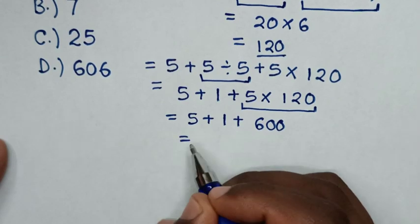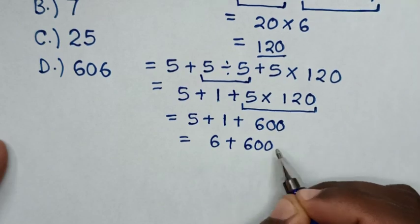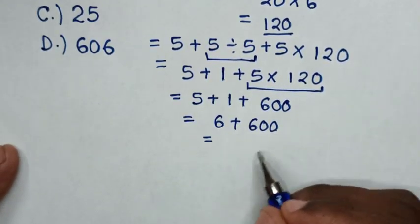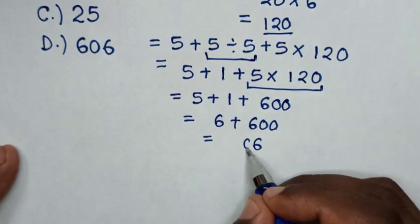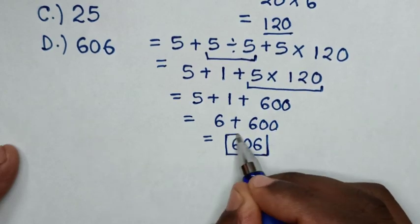Then it will be equal to, this plus this is 6 plus 600. Then it will be equal to 6 plus 0 is 6. Then 0, 6. So 606 is our final answer.